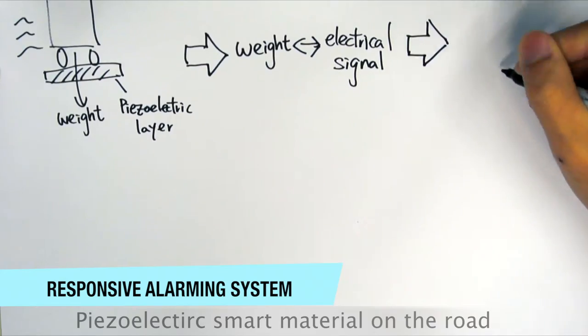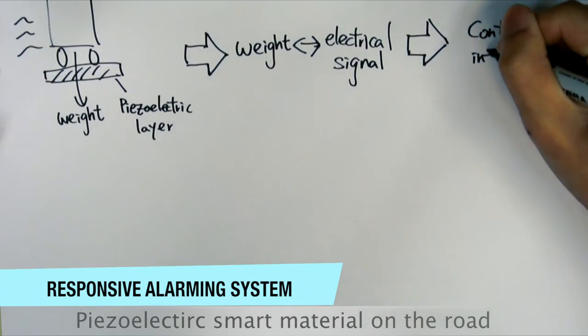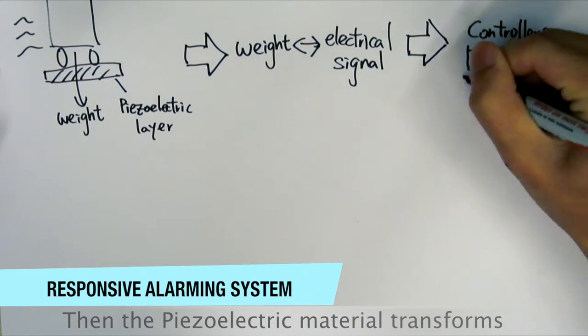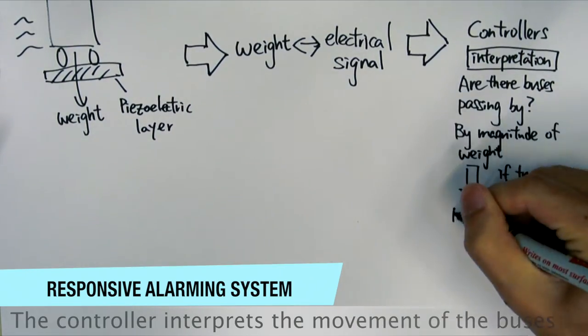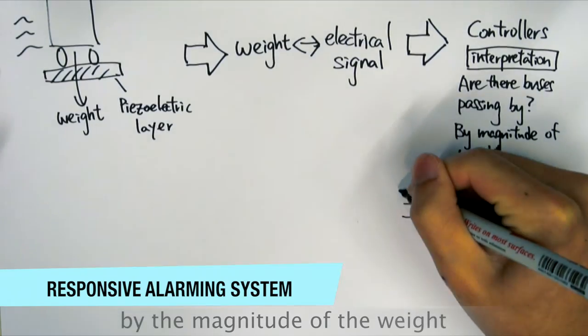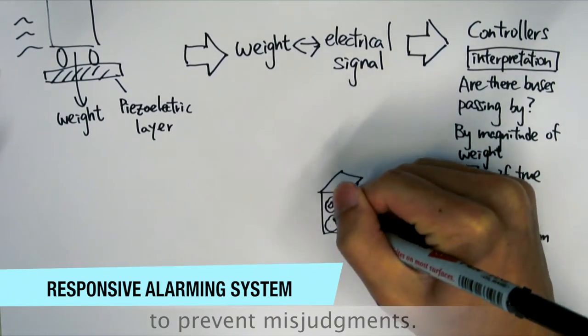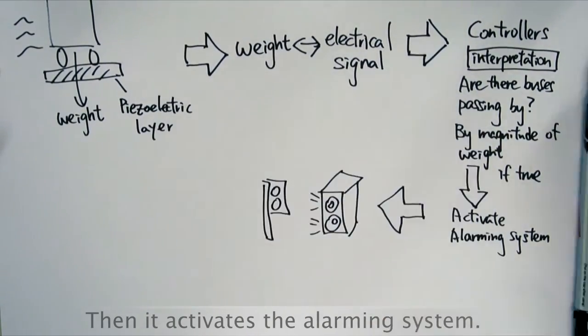There are layers of piezoelectric smart materials on the road. The piezoelectric materials transform the weight into electric signals. Controllers interpret the movement of the buses by the magnitude of the weight to prevent misjudgments. Then it activates the alarming system.